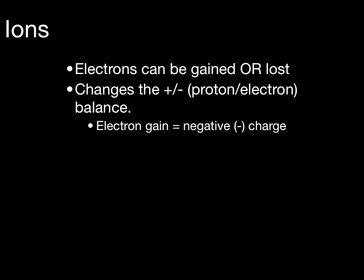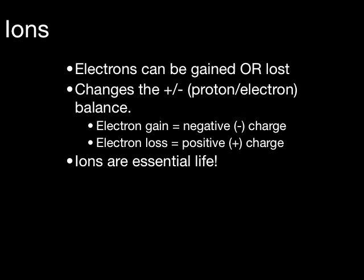Gaining or losing electrons changes the balance between the number of protons and the number of electrons. If electrons are gained, the ion has a negative charge — there are more electrons than protons, meaning more negative charges than positive charges. When electrons are lost, the ion has a positive charge — more protons than electrons. Without ions, there would be no chemical compounds, and without chemical compounds, there would be no life.